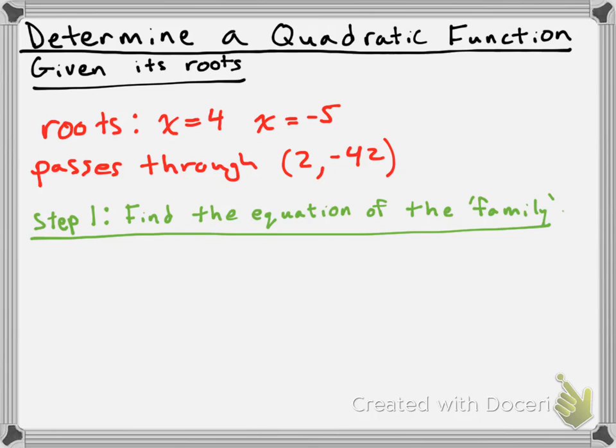Now what do I mean by family? The idea is, I know that it has roots x equals 4 and x equals negative 5. But there could be all sorts of different quadratic functions that have those roots — ones that open up, ones that open down, skinny ones, fat ones. I have a whole bunch of possibilities for parabolas with roots at x equals 4 and x equals negative 5. Since they all share the same roots, we call them a family of quadratic functions. So I'm going to find the equation of the family first.